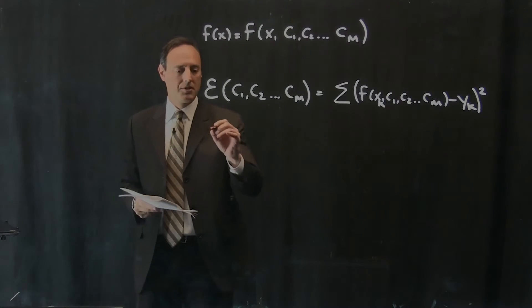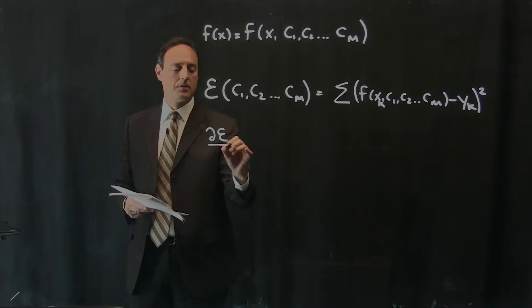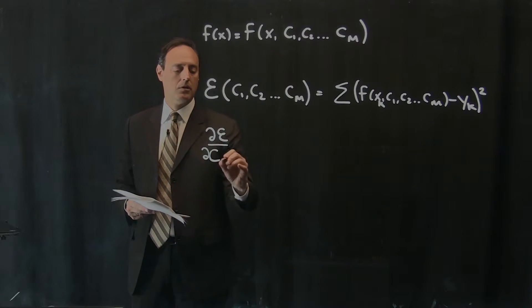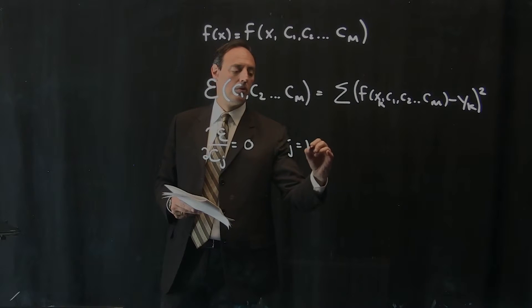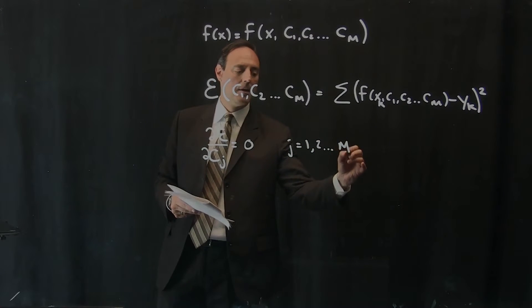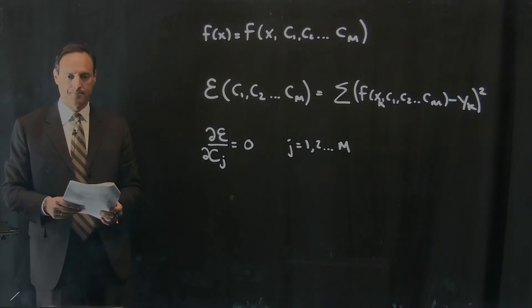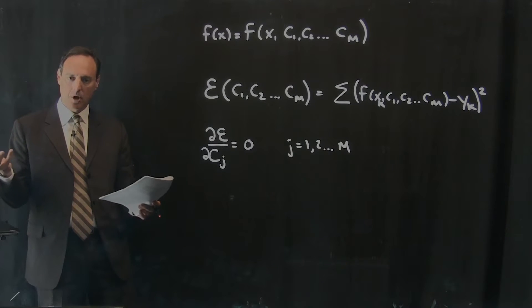The general process that we've outlined here is to take the derivative with respect to each of these c_j's, which go from 1 to 2 all the way to M, and set it to zero. That's the process.